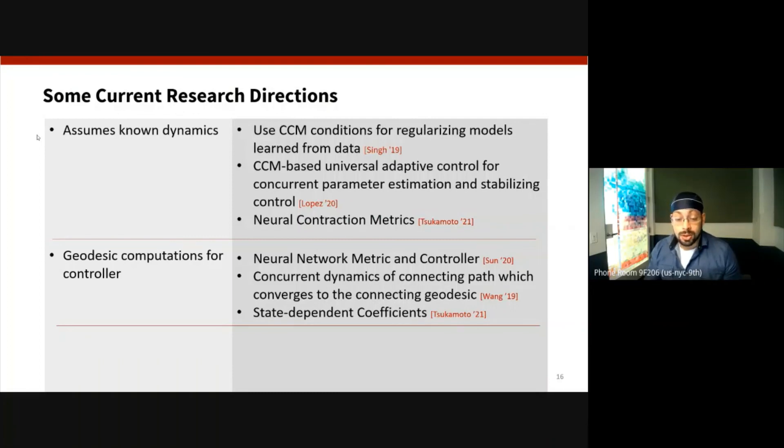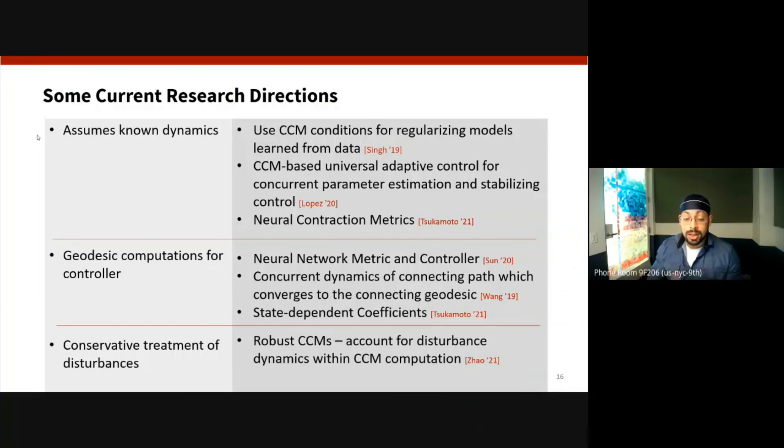And then the final limitation is that disturbances are treated somewhat conservatively in the sense that the analysis and synthesis is done in the absence of knowledge of disturbances, and then we compute the invariant bounds and the tube bounds in a post-hoc fashion. So some recent work has actually shown that by accounting for the disturbance dynamics within the CCM computation, we can compute what are known as robust CCMs and thereby compute much tighter tracking bounds.